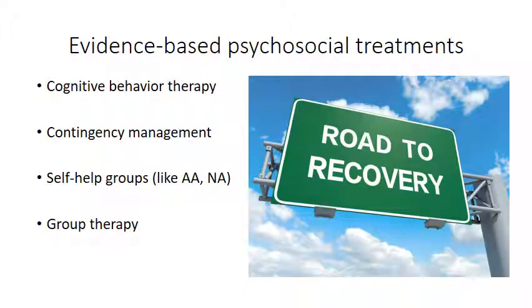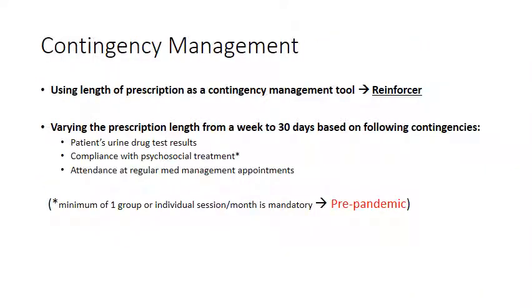We also have evidence-based psychosocial treatments, including CBT, contingency management, self-help groups like NA/AA, and group therapy. Contingency management uses prescription length as a contingency and reinforcer — changing prescription lengths from one week to 30 days based on drug screen results. This technique is used in our clinics to increase treatment retention and improve outcomes.